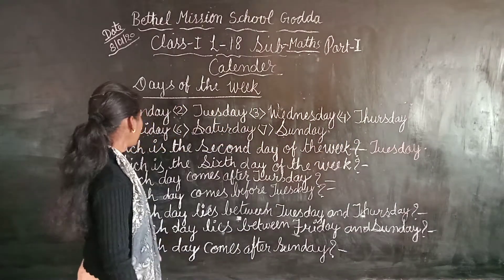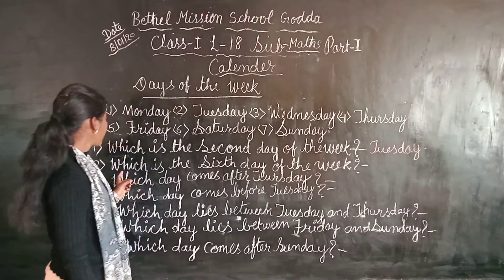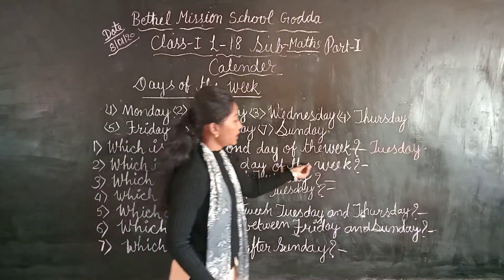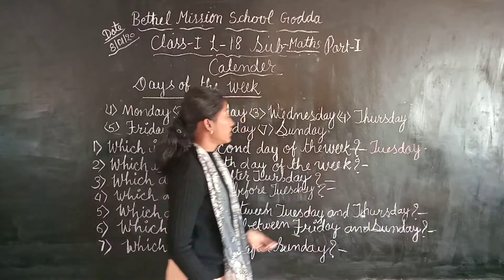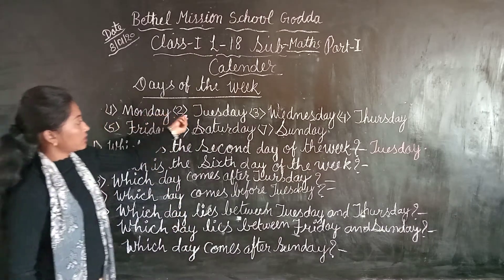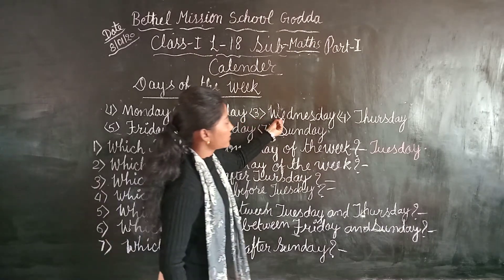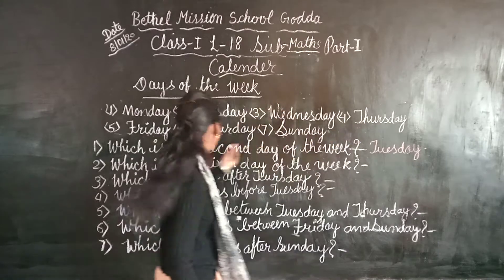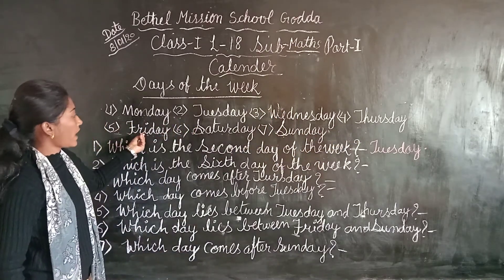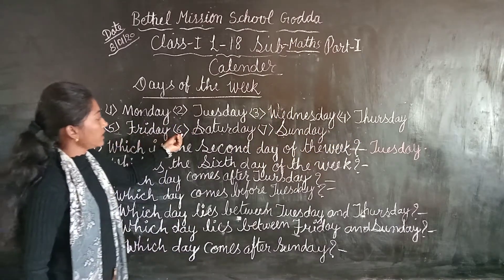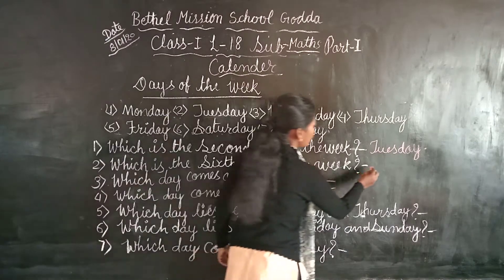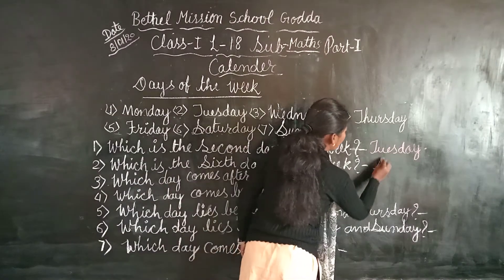Next question: which is the sixth day of the week? First Monday, second Tuesday, third Wednesday, fourth Thursday, fifth Friday, sixth Saturday. So we will write here sixth — Saturday.